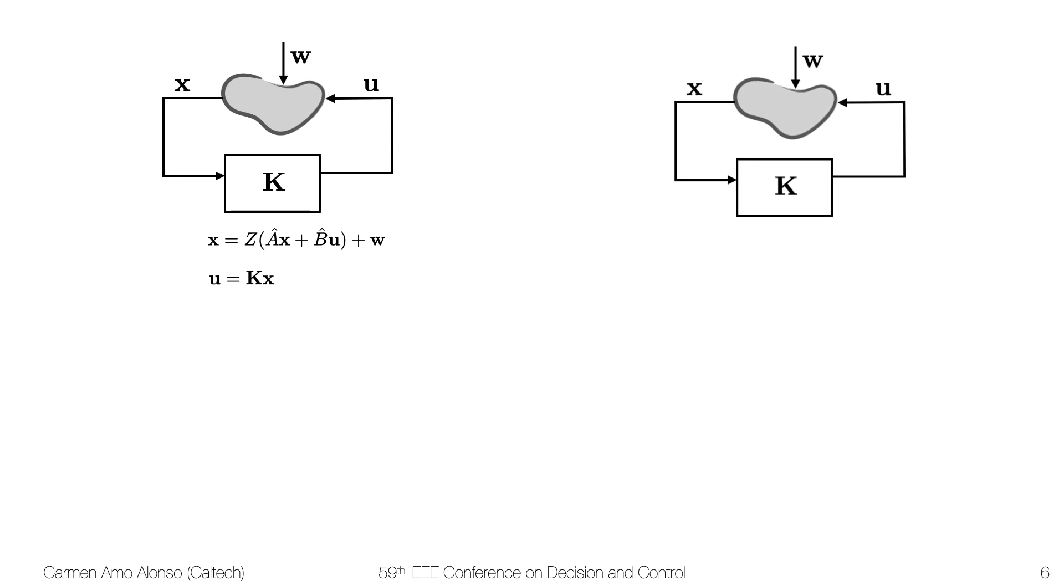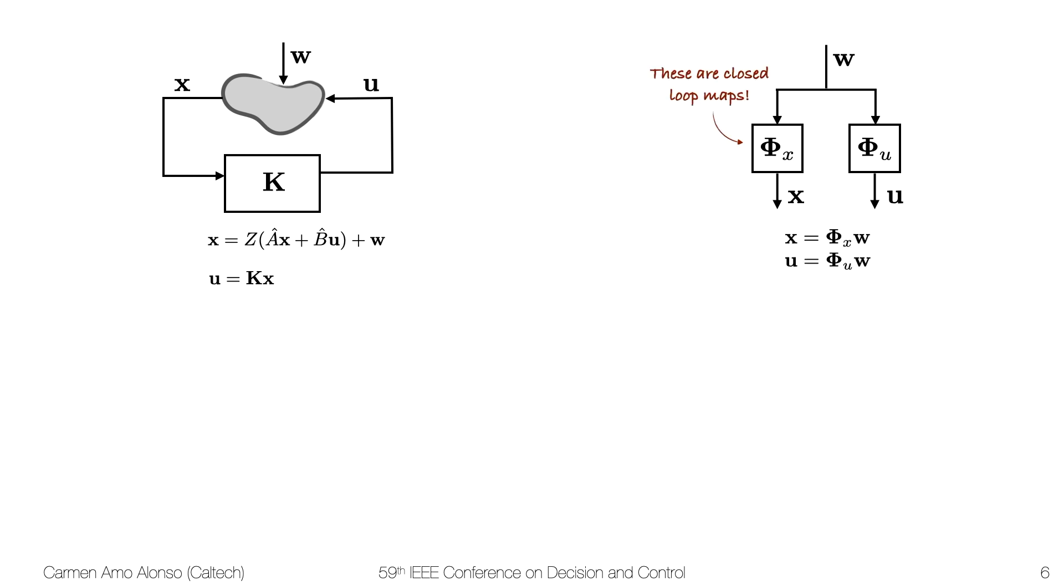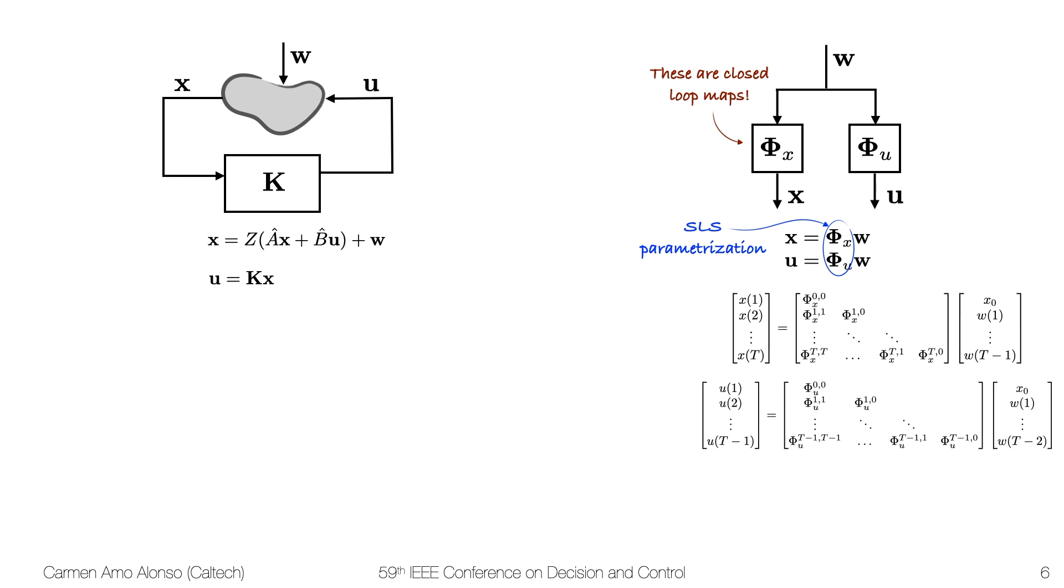What SLS does is it doesn't care what the open-loop is doing and what the controller is doing, it just cares about the closed-loop maps between disturbance, state, and input. These phis are exactly what SLS parameterizes. Just for reference, these phis have also a block-lower triangular structure. The SLS theorem provides a sufficient and necessary condition for two closed-loop maps to parameterize the system.